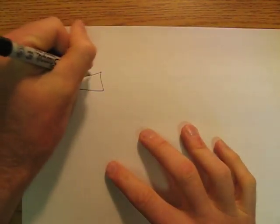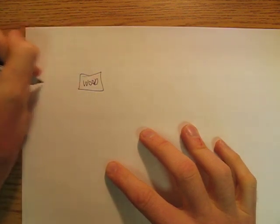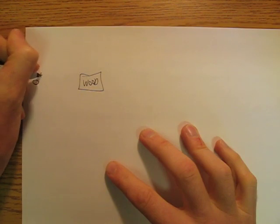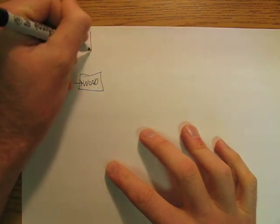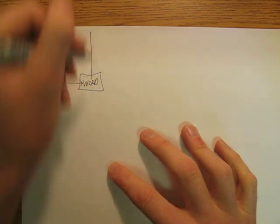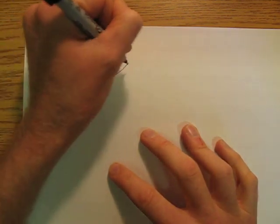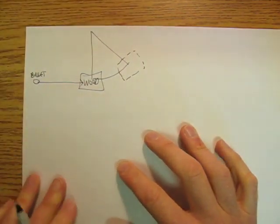We've got a block of wood, we have a bullet, and the bullet goes into the block of wood. The block of wood is on a string, and so it swings up to there.